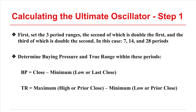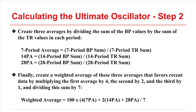Within these periods, buying pressure and true range must be determined. Buying pressure is considered by Williams as the close minus whatever is lower — that low or the last day's close — whereas the true range is whichever is higher, either that day's high or the prior close, minus whichever is lower, that day's low or the prior close. Once those values are determined, you create three averages by dividing the sum of the buying pressure values by the sum of the true range values from each period range. So the seven-period average is equivalent to the sum of the seven-period buying pressure values divided by the sum of the seven-period true range values.